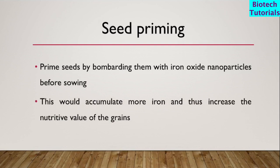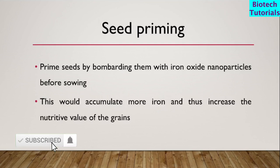The last method is seed priming — priming seeds by bombarding them with iron oxide nanoparticles before sowing. This would accumulate more iron and thus increase the nutritive value of the grains. That's all on biofortification. If you like this video, please share and subscribe to my channel. Thank you.